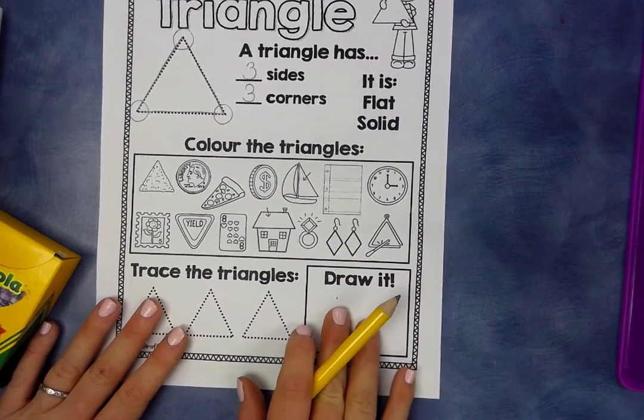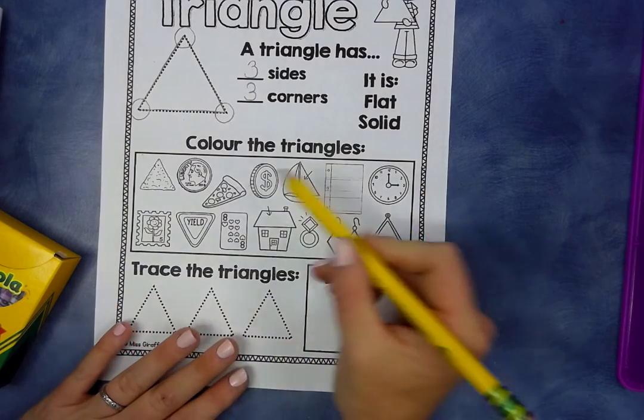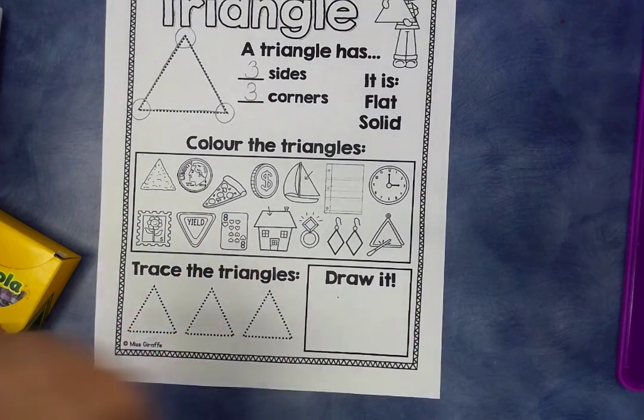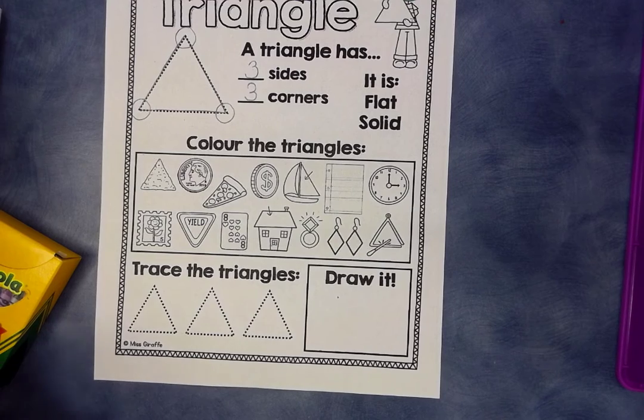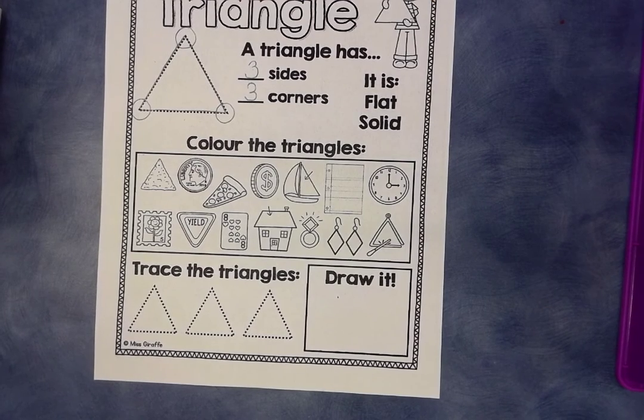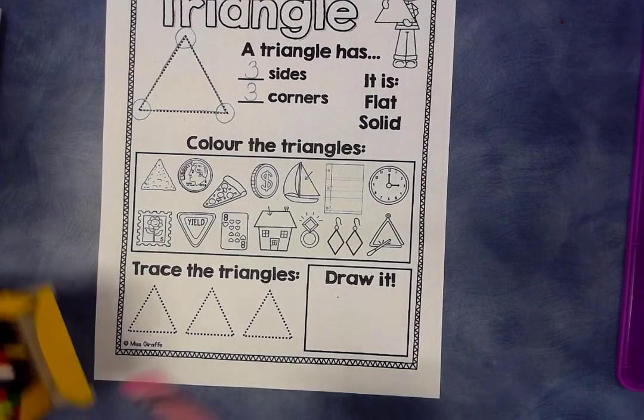So we're going to go to color the triangles. We need to look at all these different shapes. You guys are going to try to find all of the shapes that are triangles. Now you can use different colors or you could just use one color. I'm going to use the color pink.